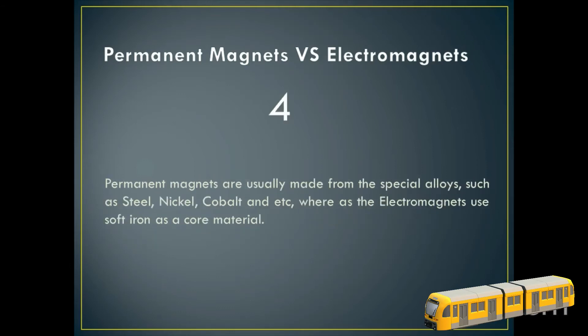Number four tells us here: the permanent magnets are usually made from special alloys such as steel, nickel, and cobalt, whereas electromagnets use soft iron as their core material.